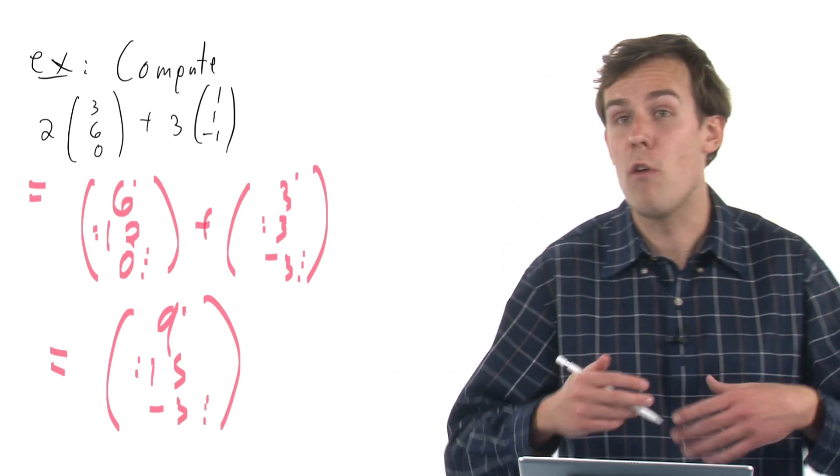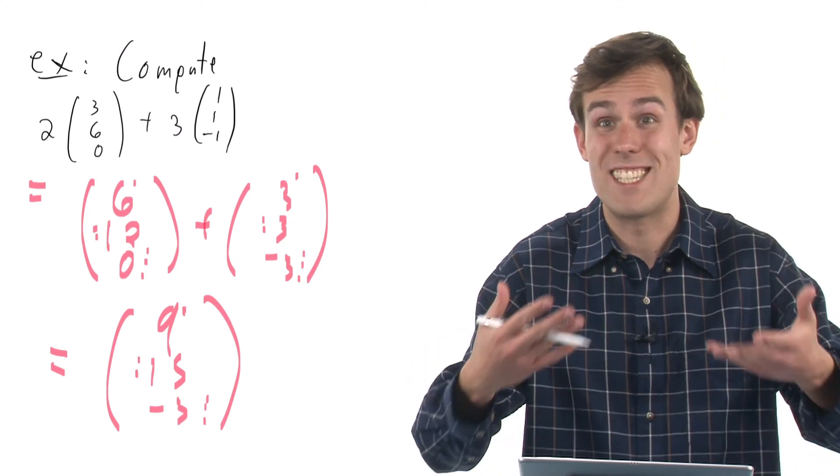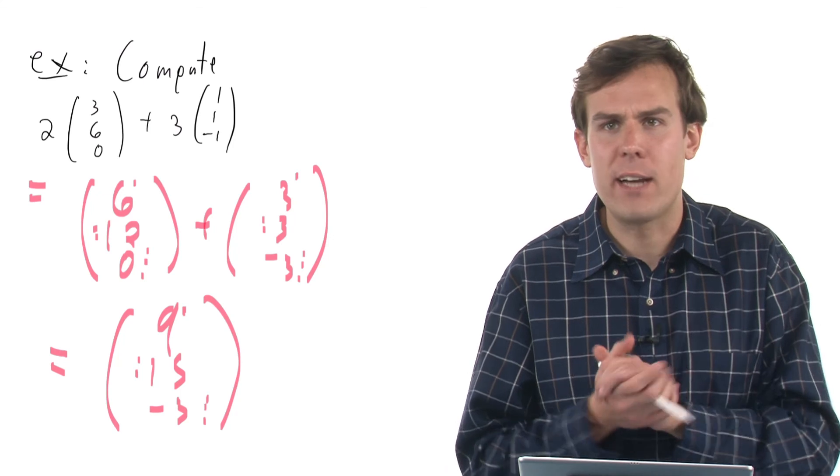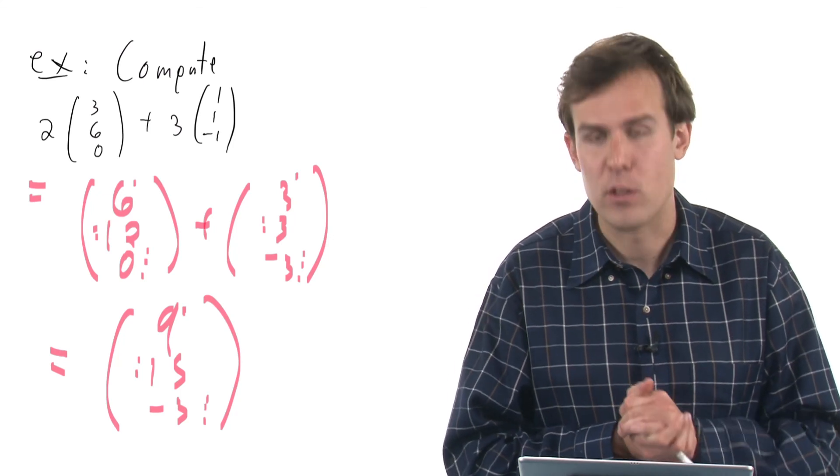Once you know that the matrices or vectors are the right size and you can add them together, you just add or subtract in each coordinate, and it's fairly straightforward.